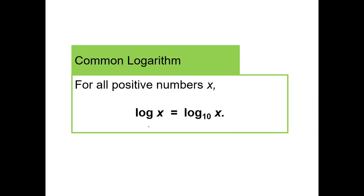Common logarithm: For all positive numbers x, log x is equal to log base 10 of x. So when we write log x without anything there, assume there's an invisible 10 here, so the base is automatically assumed to be 10. When we say log x, we actually mean log base 10 of x, but we will never write log base 10 of x.